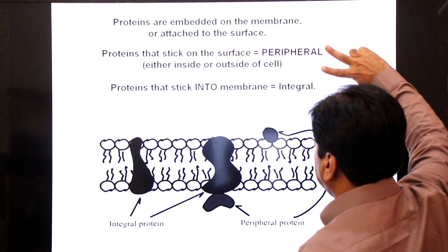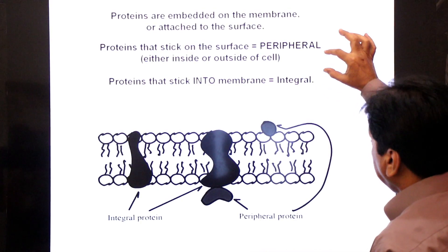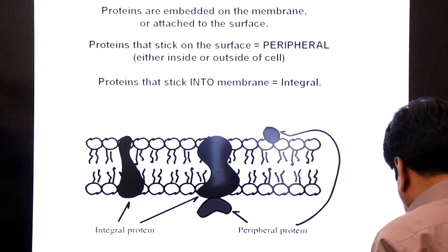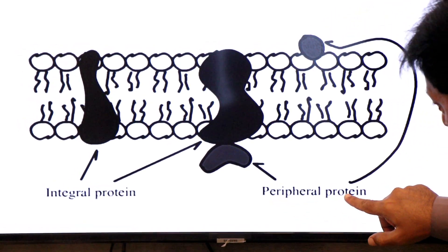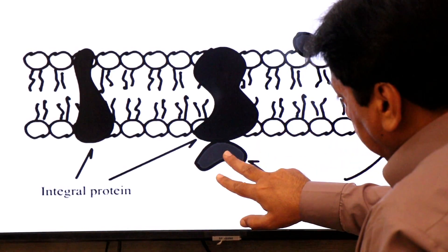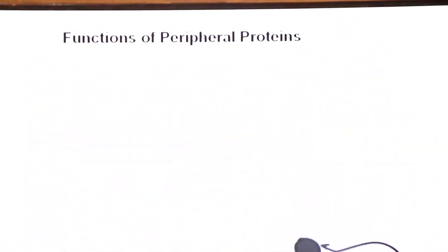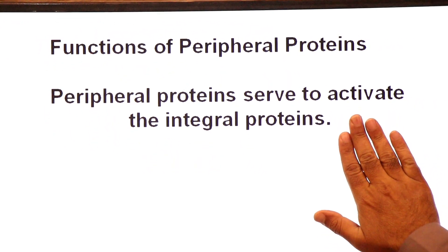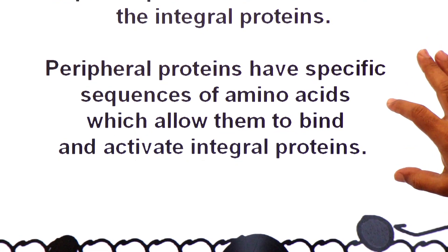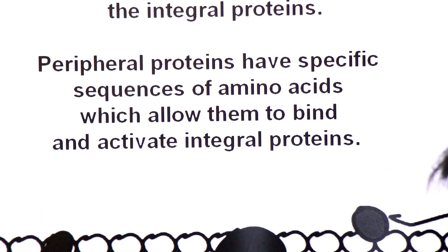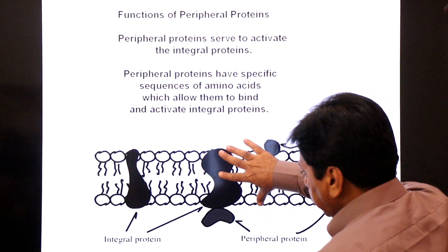In the fluid mosaic model, proteins can be peripheral or integral. Peripheral proteins serve to activate the integral proteins. Peripheral proteins have a specific sequence of amino acids which allows them to bind to and activate integral proteins.